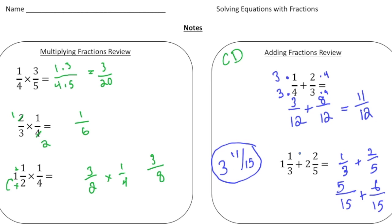Another method would have been to make these improper fractions. This would have been four-thirds plus twelve-fifths, and then it's really the same process where you just rename them with common denominators, and regardless, you get the same answer of three and eleven-fifteenths.